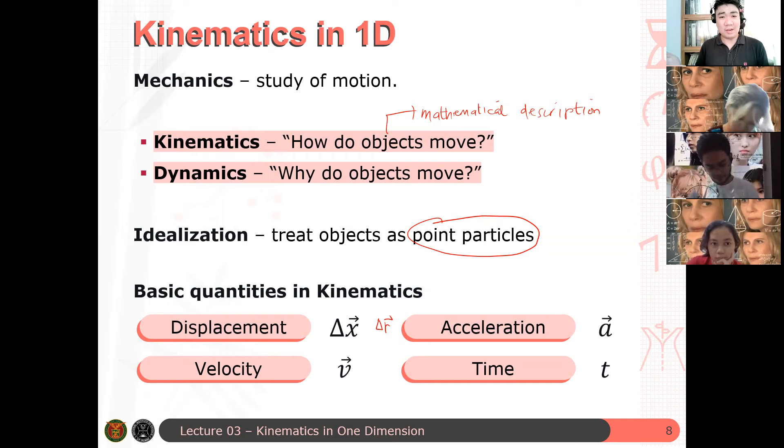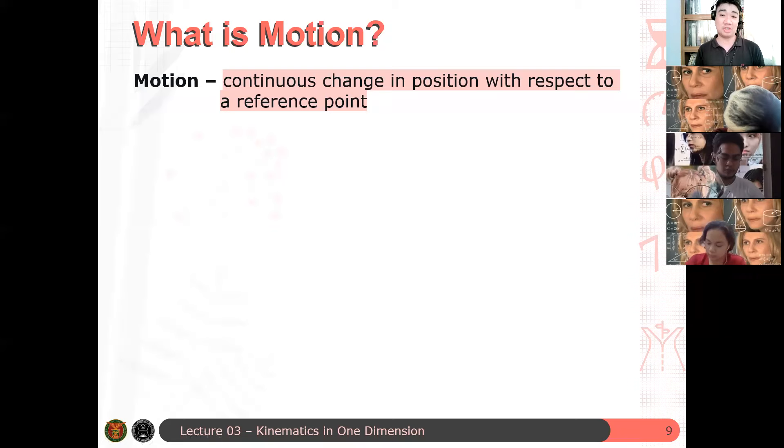Now, of course, we know that mechanics studies motion. But what is motion? Let's define motion first. We already have a description of motion. But what exactly is motion? You can define motion as the following: it's a continuous change in position with respect to a reference point. I want to emphasize the importance of the reference point here. The reference point means that there should be something that's set as zero. And it's the first thing that you need to do when you solve problems in mechanics. You need to set your reference.